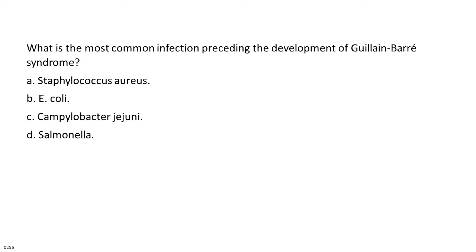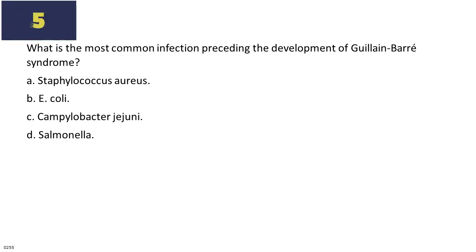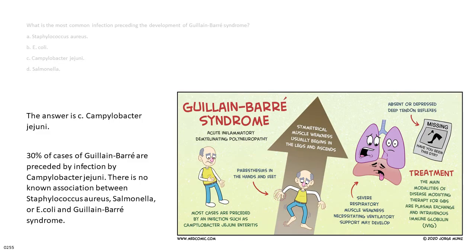What is the most common infection preceding the development of Guillain-Barré syndrome? A. Staphylococcus aureus. B. E. coli. C. Campylobacter jejuni. D. Salmonella. The answer is C. Campylobacter jejuni. 30% of cases of Guillain-Barré are preceded by infection by Campylobacter jejuni. There is no known association between Staphylococcus aureus, Salmonella, or E. coli and Guillain-Barré syndrome.